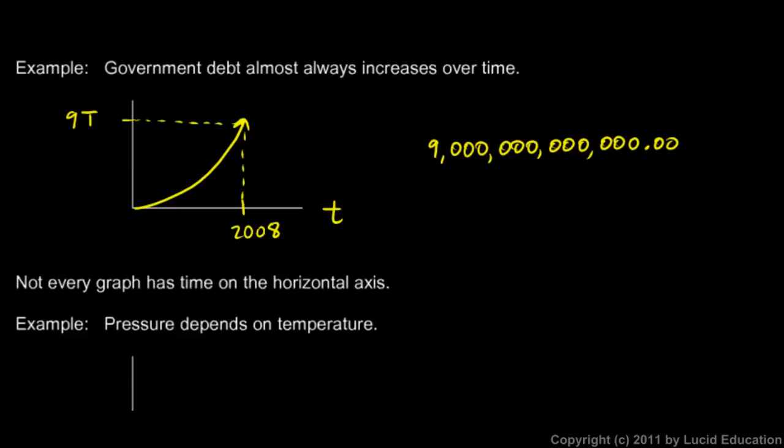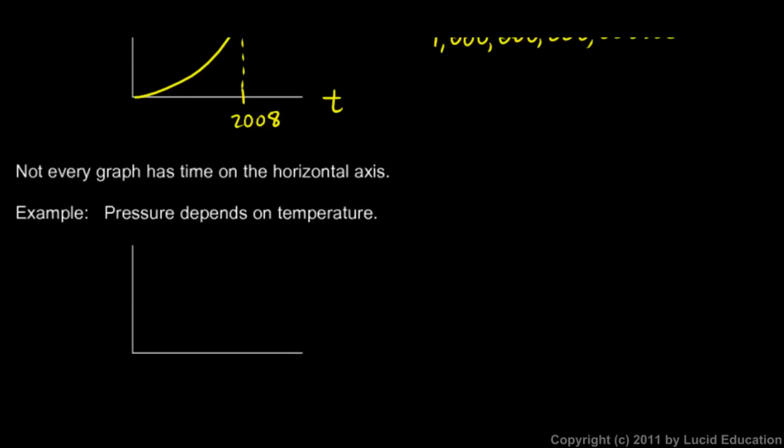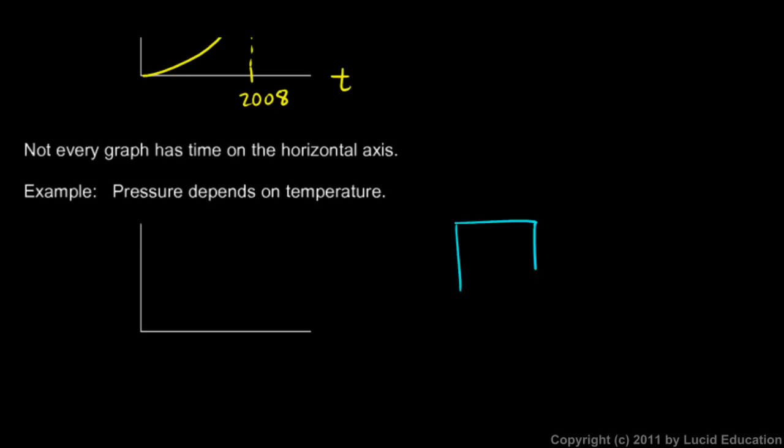Now, take note that not every graph has time on the horizontal axis. Here's another example. Pressure depends on temperature. If you have a container, and let's say there's some gas in it, some air, any kind of gas. Not gasoline like you run in a car, but I mean gas as in not a liquid and not a solid.